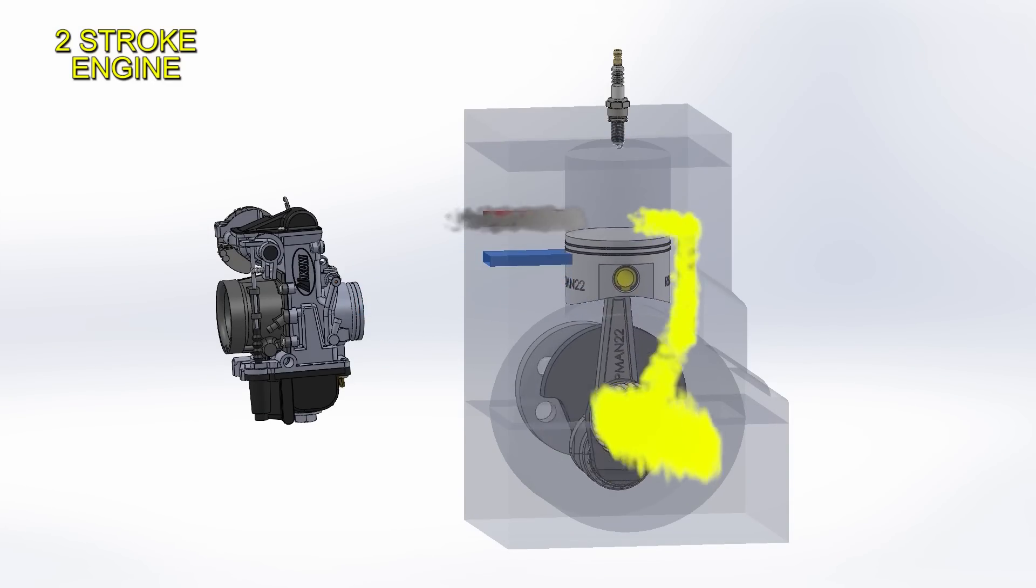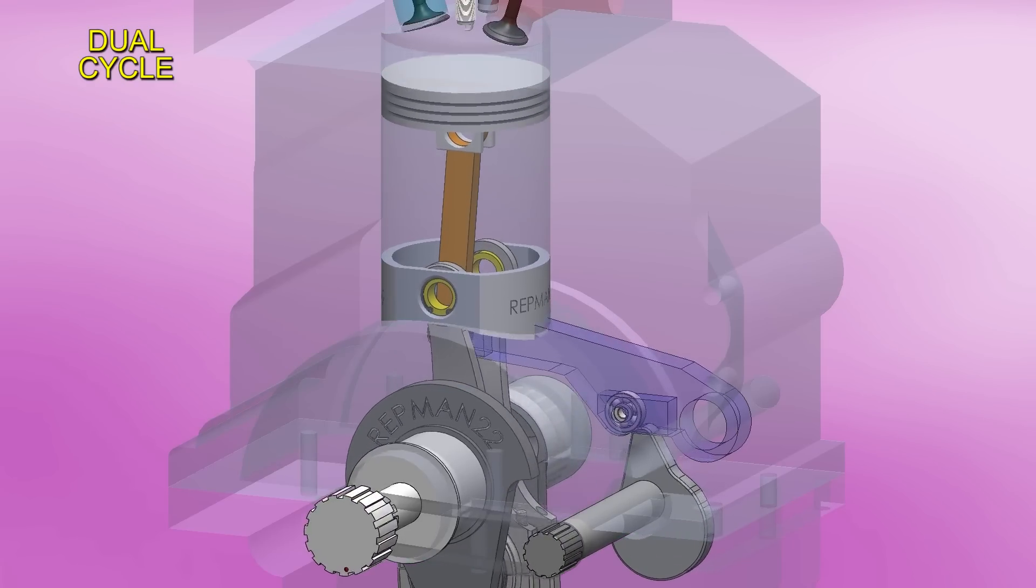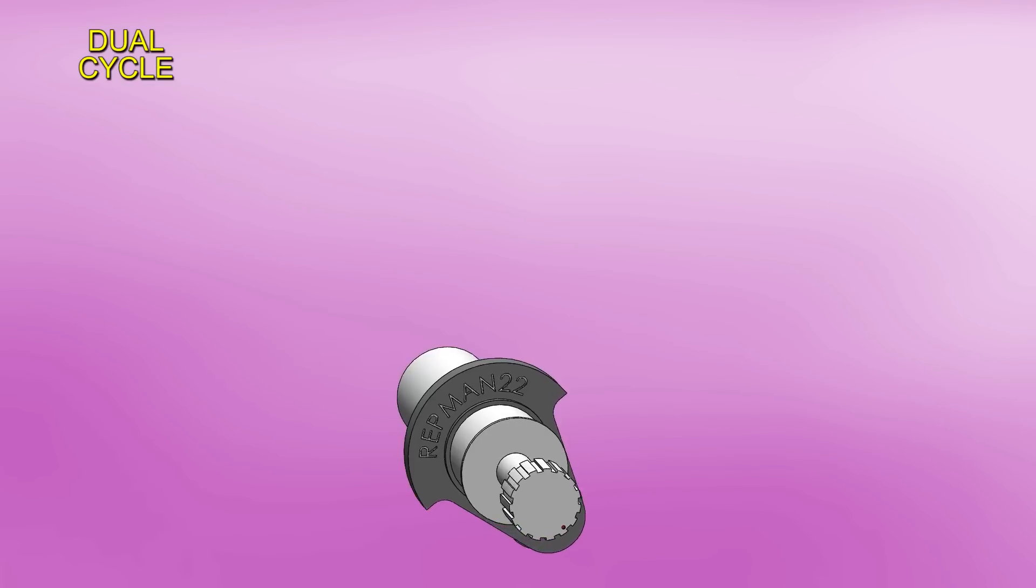However, this engine completes the cycle in a single revolution of the crankshaft, so the cylinder is used at 100%, producing more power compared to a four-stroke. Now, what if we could combine these two engines into one? Exactly. Let's see in detail how it works.